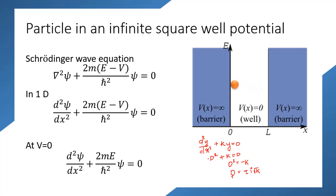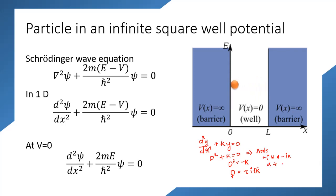The roots of this equation are +ik and −ik. These are of the form α + iβ and α − iβ, where α = 0 and β = k. These roots are complex conjugates of each other.